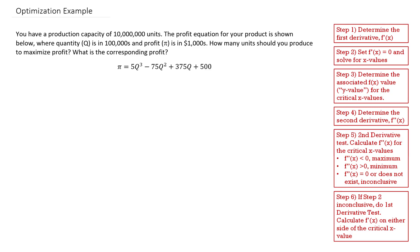Here we have an example where we're going to try to optimize profit. You have a production capacity of 10 million units. The profit equation for your product is shown below, where quantity q is in hundreds of thousands and profit pi is in thousands. How many units should you produce to maximize profit? What is the corresponding profit?